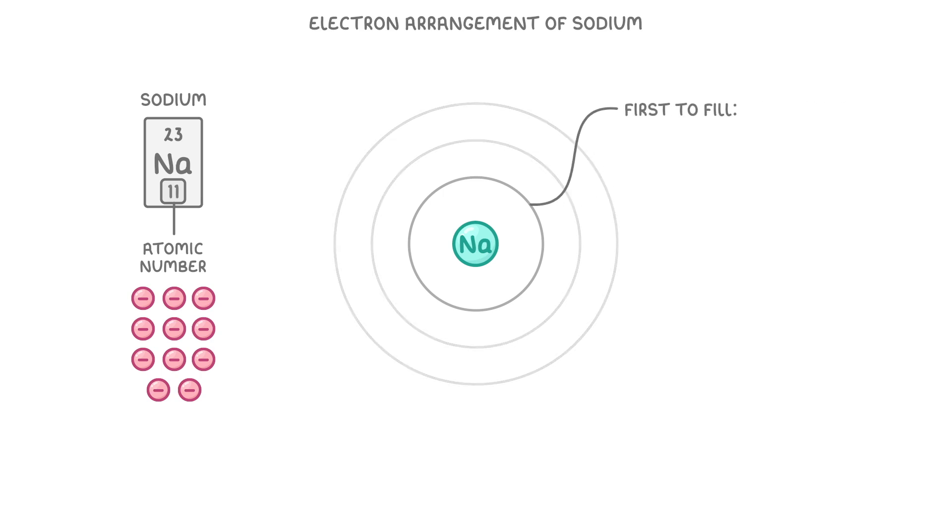The first one to fill is the one closest to the nucleus, as this one will have the lowest energy level. This first shell can only hold 2 electrons. The second shell, though, can hold up to 8, and the order in which you add them can sometimes be important.